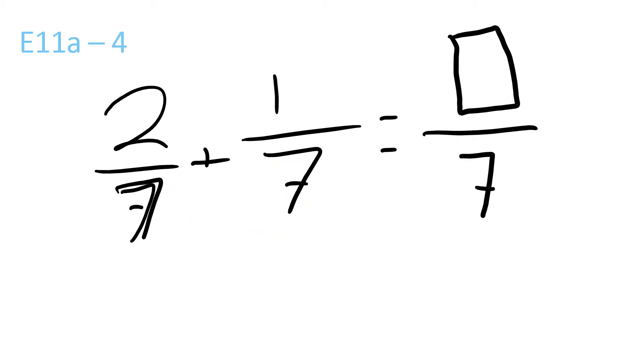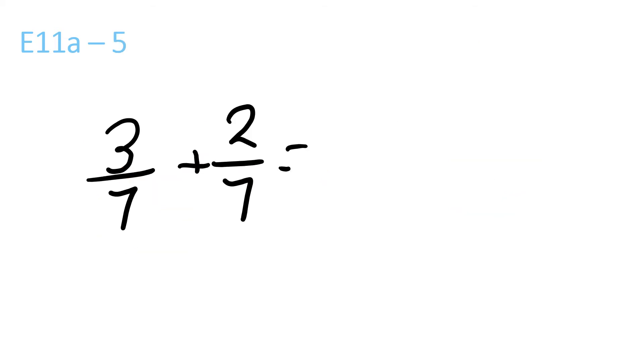So we have 2 plus 1, 3 over 7. And 3 plus 2 is 5, because of the pluses here, over 7, because 7 is at the bottom.